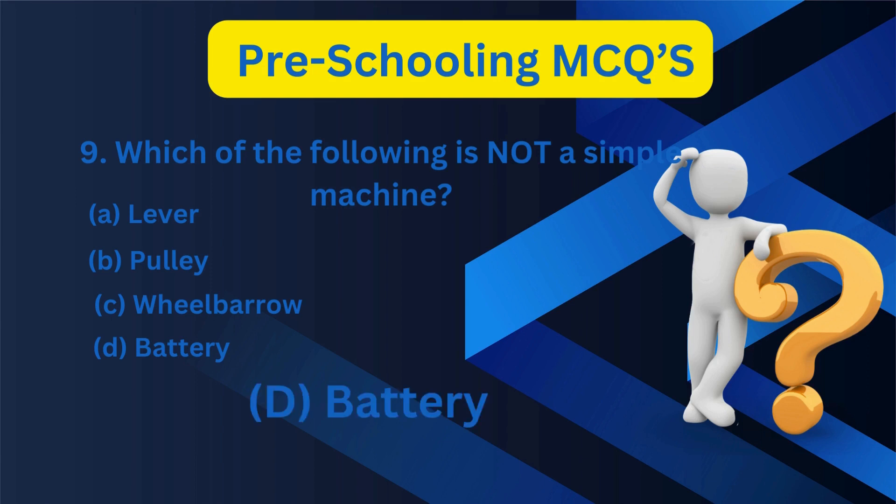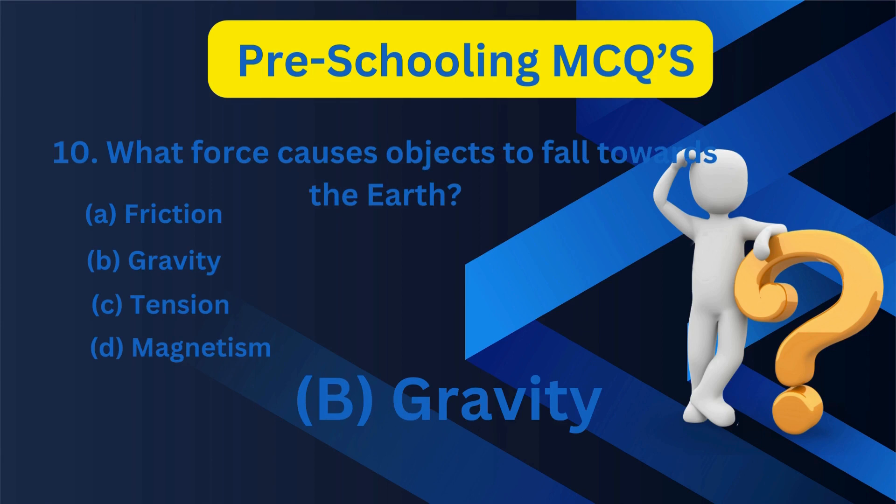10. What force causes objects to fall towards the earth? A. Friction, B. Gravity, C. Tension, D. Magnetism. B. Gravity.